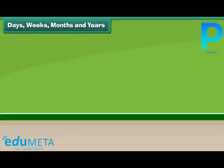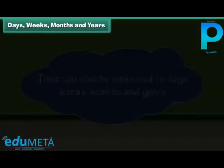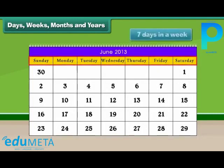Days, weeks, months and years. Time can also be measured in days, weeks, months and years. There are 7 days in a week.